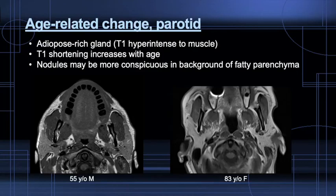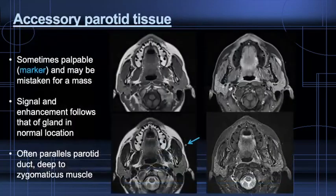The parotid undergoes fatty involution with age, and it's a good reminder to always include pre-contrast T1 imaging on face MRI protocols, as pathology may be more conspicuous in a background of brighter fat signal. This case was sent for a palpable facial mass. MRI simply points out accessory parotid tissue of normal signal, identical to the remaining parotid tissue — asymmetric, yes, but not pathologic.